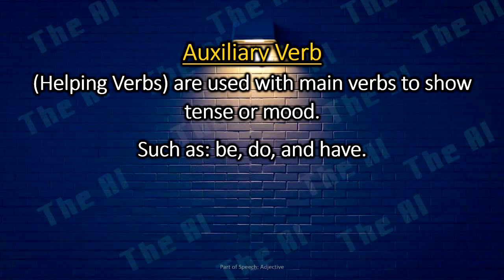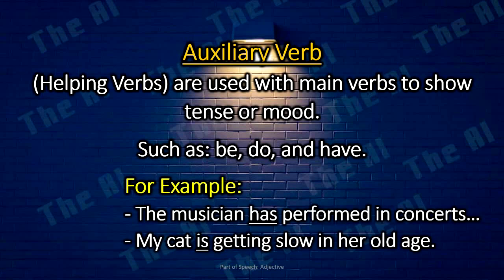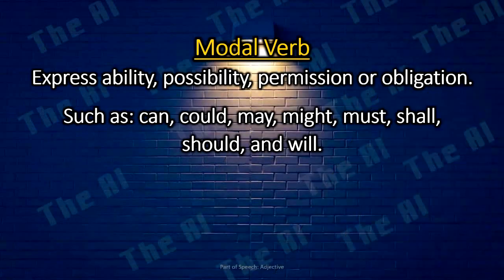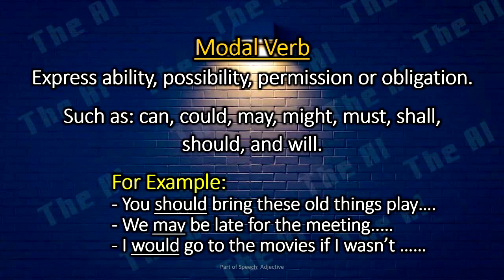Auxiliary verbs, also called helping verbs, are used with main verbs to show tense or mood, such as be, do, and have. For example: The musician has performed in concerts all over the world. My cat is getting slow in her old age. Modal verbs express ability, possibility, permission, or obligation, such as can, could, may, might, must, shall, should, and will. For example: You should bring these old things outside the store. We may be late for the meeting — the traffic is too bad. I would go to the movies if I wasn't busy today.